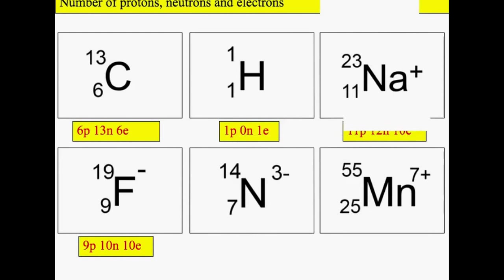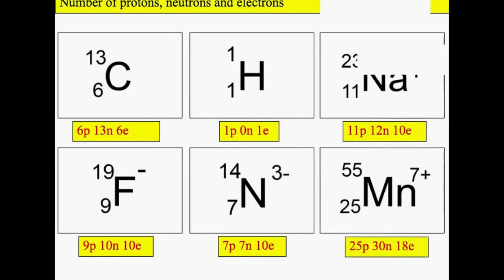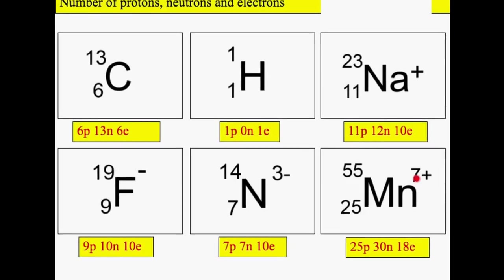Then we have fluorine. Fluorine has a one negative charge, so it's gained an electron. This nitrogen ion has gained three electrons. Here is manganese, and it's lost seven electrons.